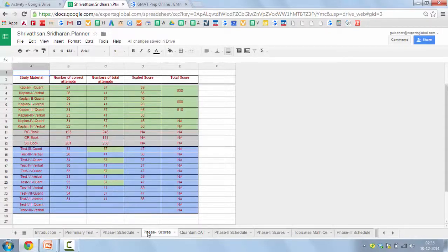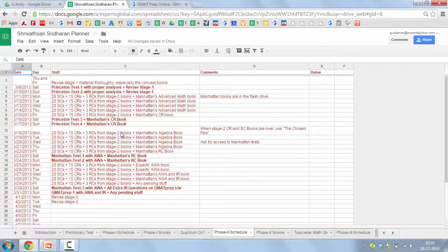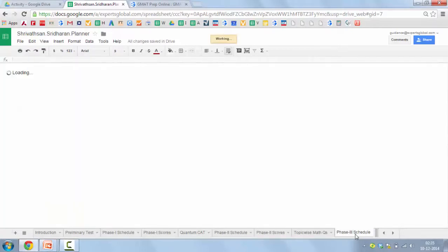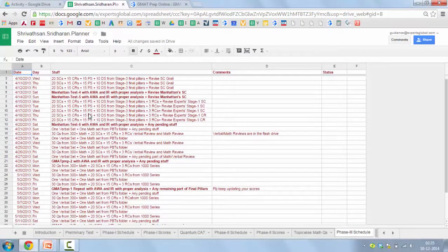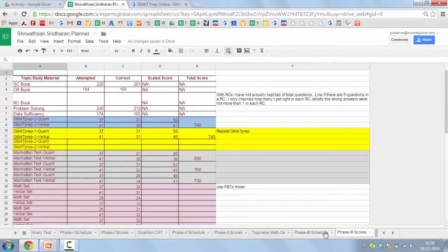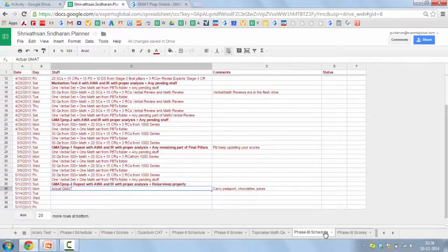And once stage one is over, we give the student a detailed feedback, along with a stage two plan, and a similar stage two score sheet. And finally, once stage two is also over, we give a detailed feedback with a final stage three plan, and this time with a date for GMAT. So this particular student went on to score a 770, and the main reason was that he was very sincere with whatever we advised.